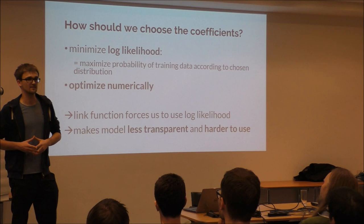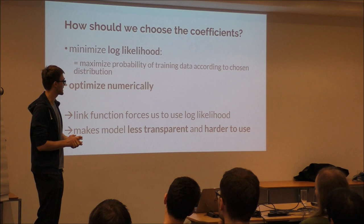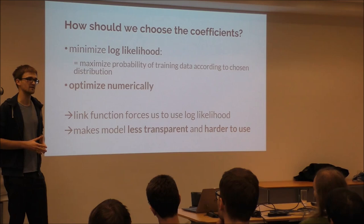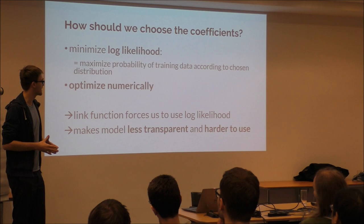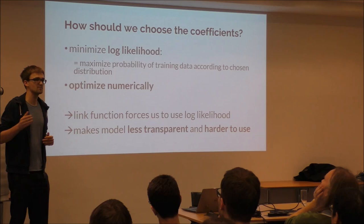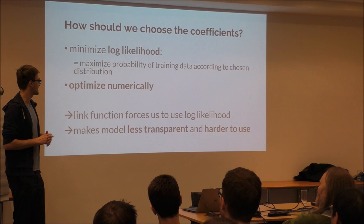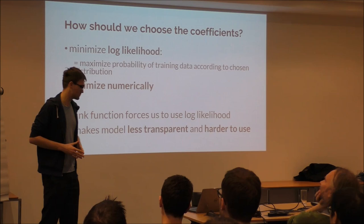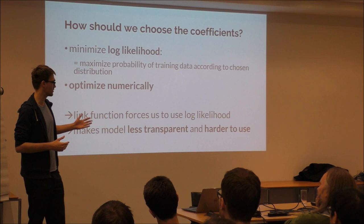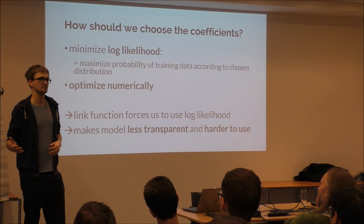How would you choose the coefficients for a GLM? You minimize the log likelihood. The log likelihood is basically the probability of your training data — all those houses with historic prices. You want the predictions of your model to be very likely given your historic data, and you optimize this numerically. The link function forces us to use log likelihood, which makes it a bit of a black box in that many theories that hold for simple linear models no longer hold.